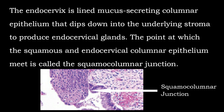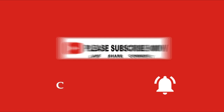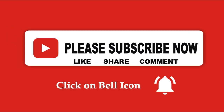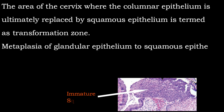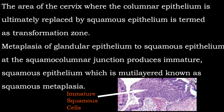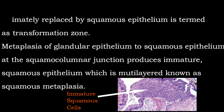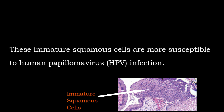The point at which the squamous and endocervical columnar epithelium meet is called the squamocolumnar junction, shown in the photograph. This area is important because most cervical pathologies arise from this place. The area where columnar epithelium is ultimately replaced by squamous epithelium is termed the transformation zone. Metaplasia of glandular epithelium to squamous epithelium at the squamocolumnar junction produces immature squamous epithelium, called squamous metaplasia. These immature squamous cells are more susceptible to human papillomavirus infection.